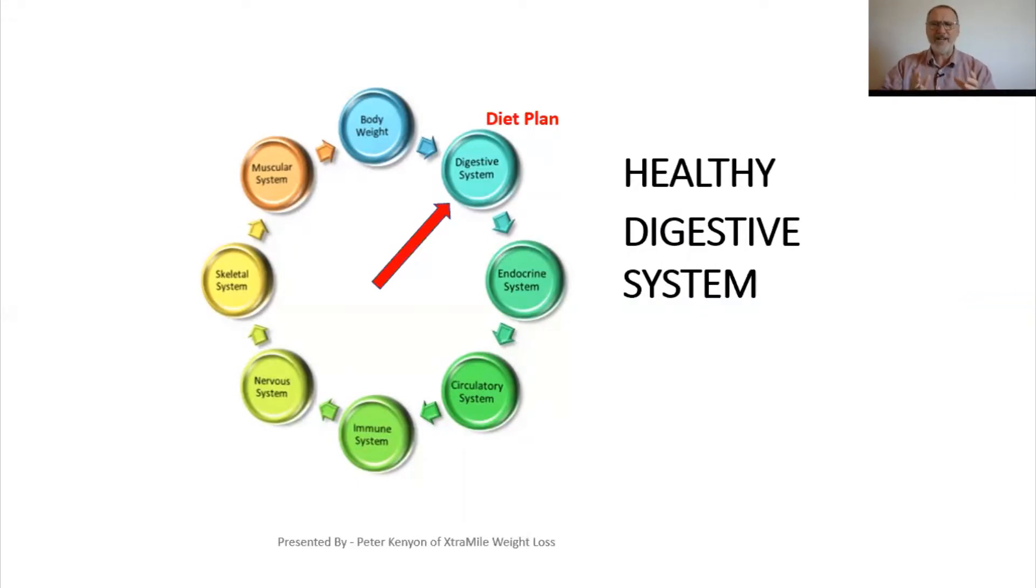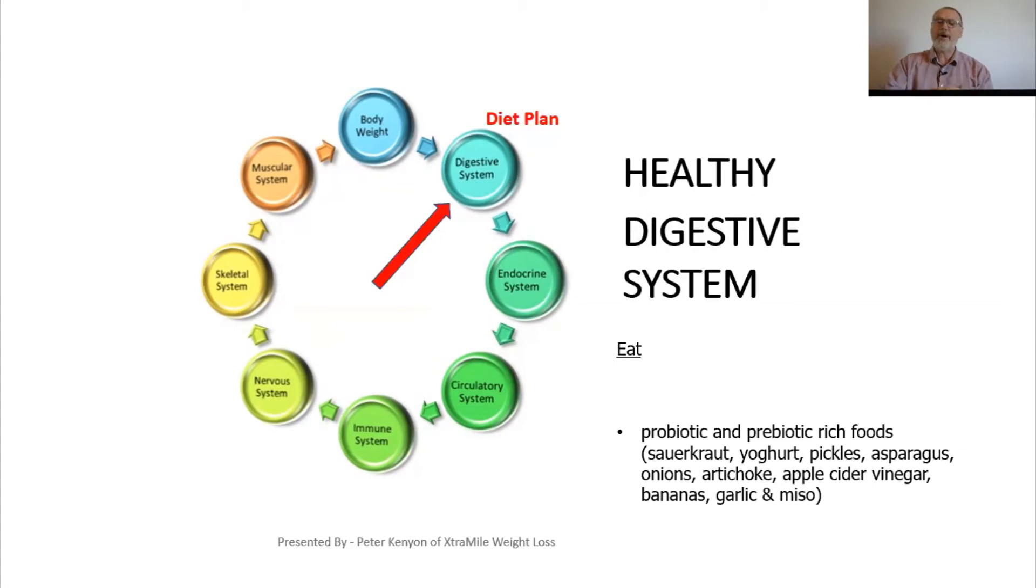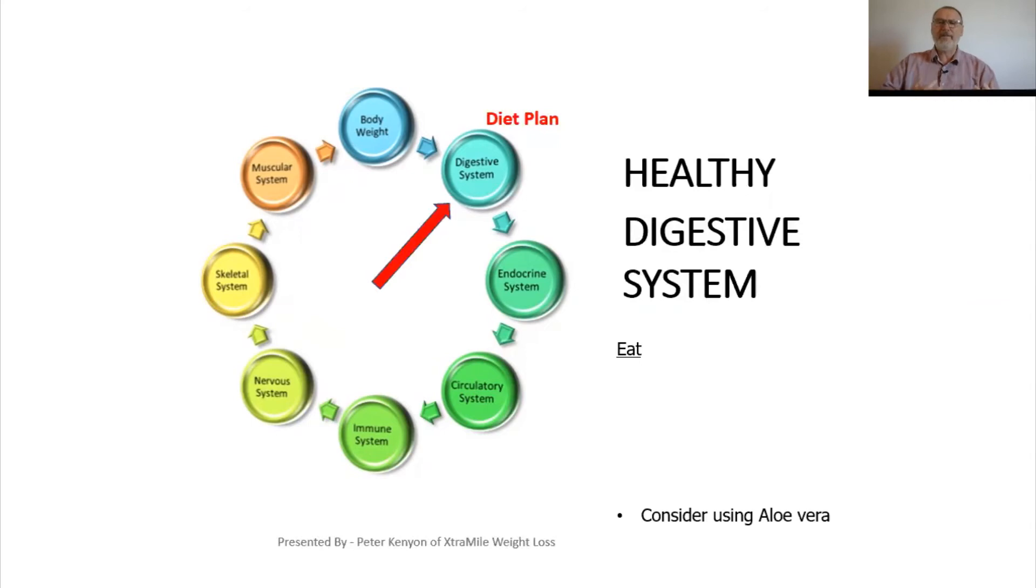Naturopaths have known for decades that if you work on somebody's digestive system and get good digestive health, you will develop a better body and help all the other systems in the body. So we're told first up to eat the correct amount of protein for our body weight we want to be. We're told to focus on fiber from the fruits and the vegetables and to look at probiotic and prebiotic rich foods. We're also asked to consider using aloe vera. Aloe vera helps to repair the internal lining of our digestive system.